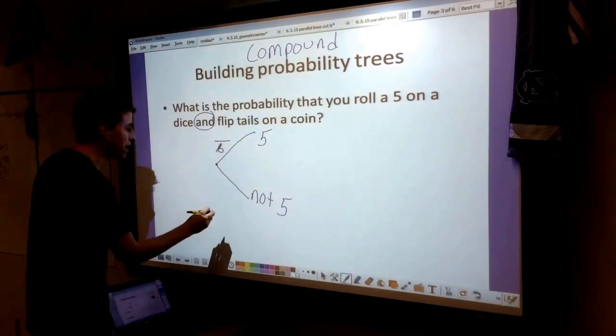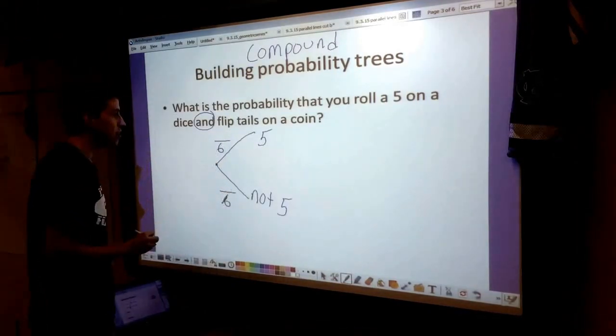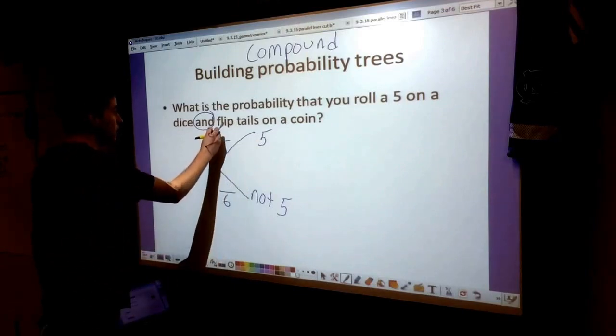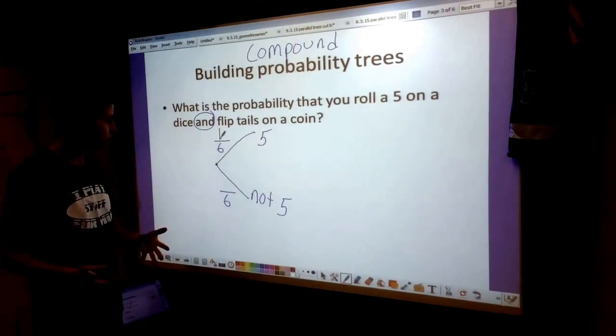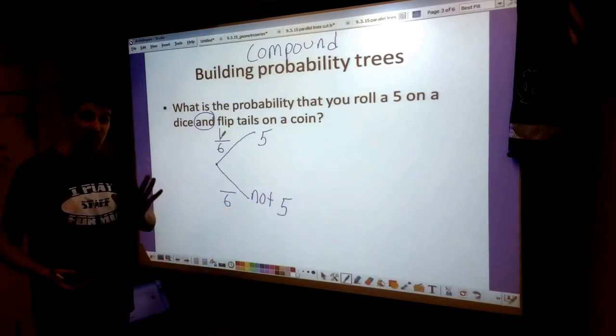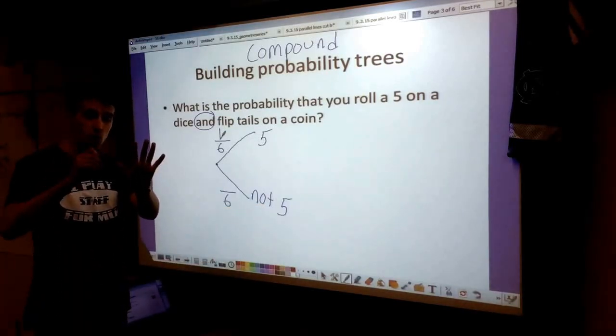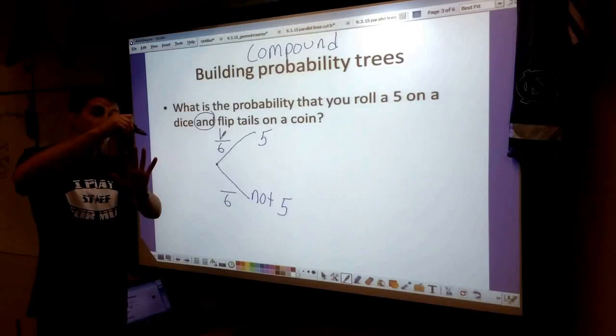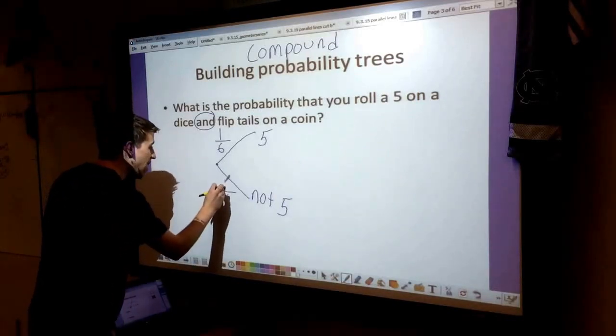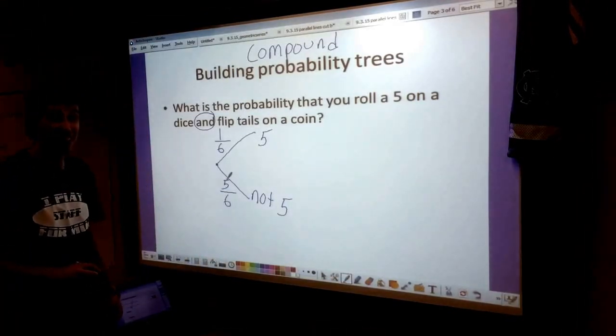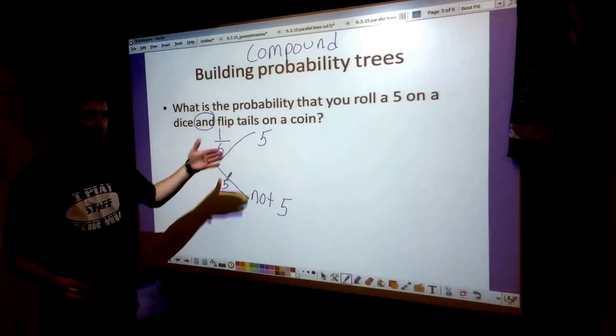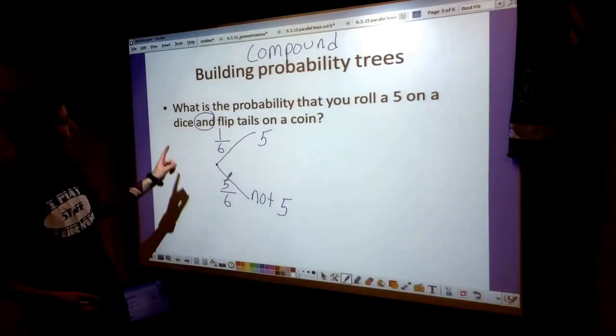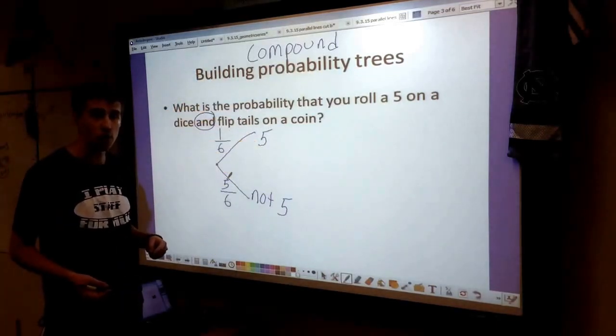So both of these will be out of 6. There's only one 5 on a dice, so there's only a one-sixth chance you're going to roll that 5. Now there are five options that aren't a 5: 1, 2, 3, 4, and 6. So there's a five-sixths chance that you're not going to get a 5.